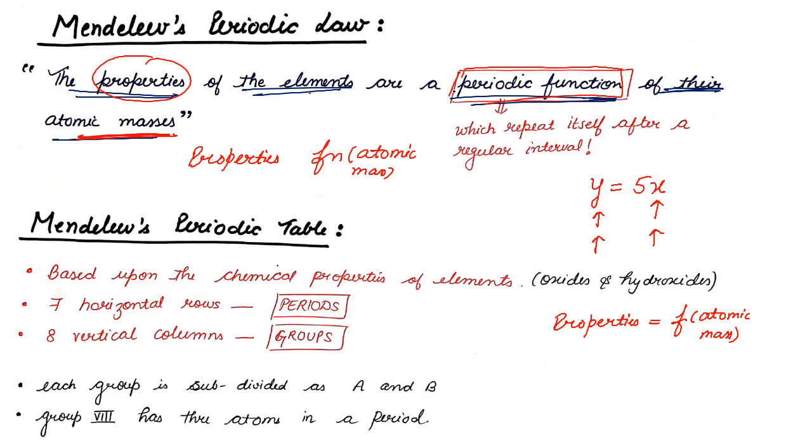But, there is a specific significance given to the word periodic. Why not simply write the properties of elements are the function of their atomic masses? Why writing the properties of the elements are the periodic function of their atomic masses? Periodic means which repeat itself after a certain regular interval. Now, see the Mendeleev's periodic table.